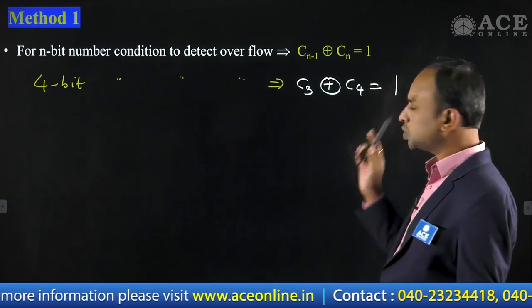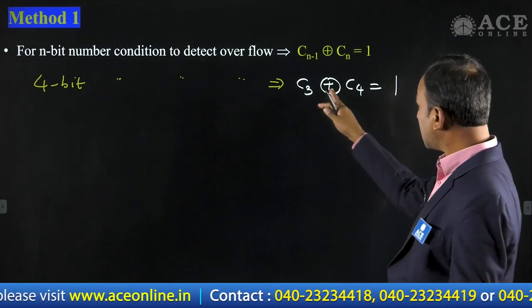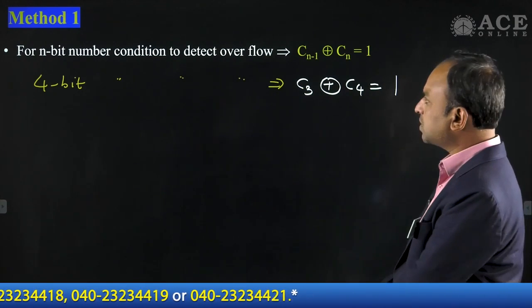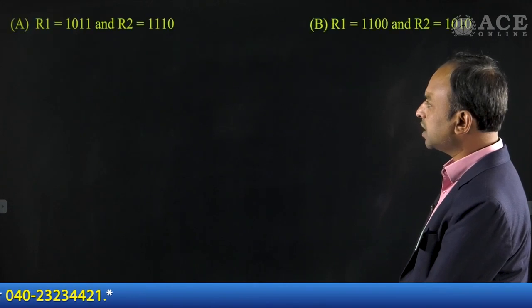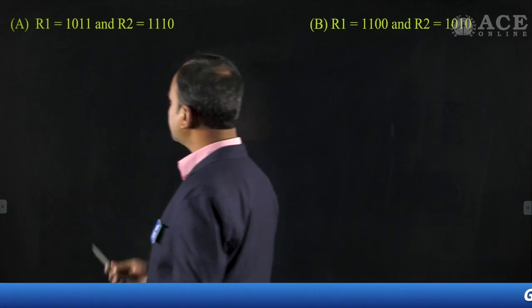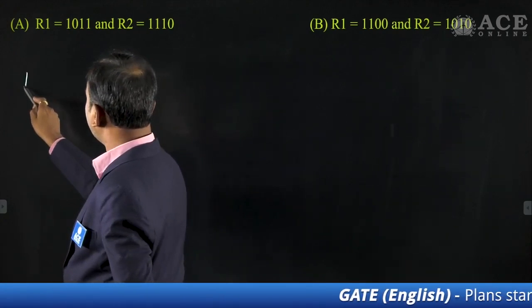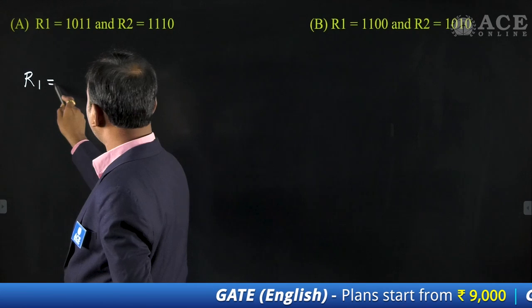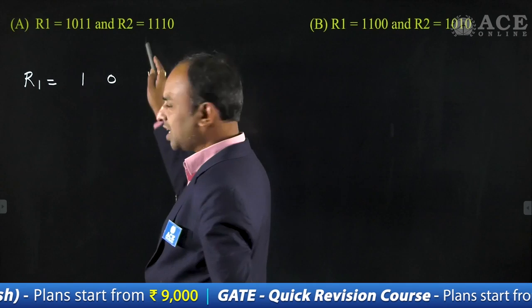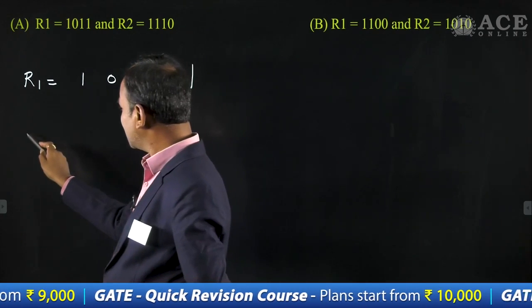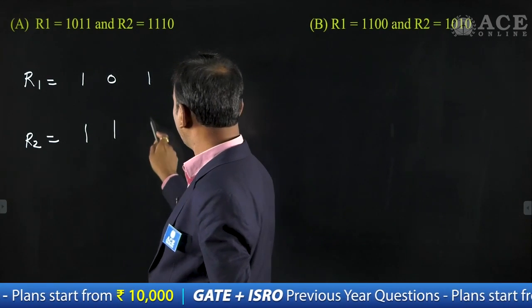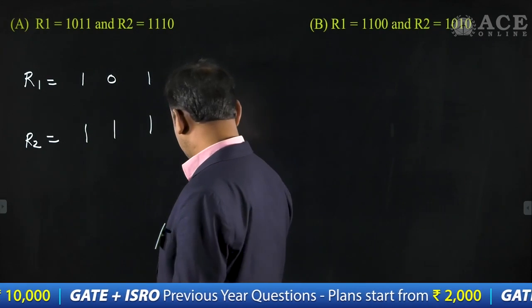For XOR, this value should be 1. When XOR equals 1, both inputs should be different. Now we will verify the options one by one. In option A, R1 equals 1011. Similarly, R2 equals 1110.